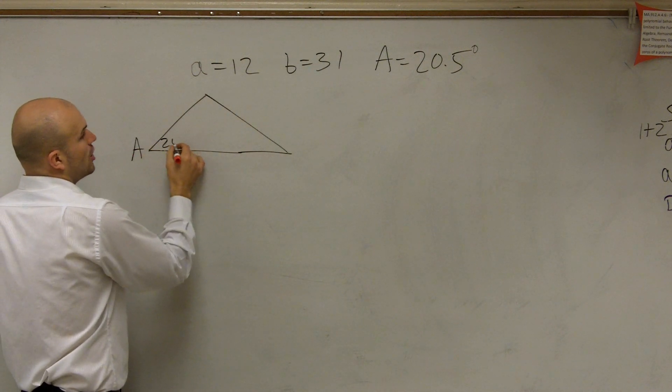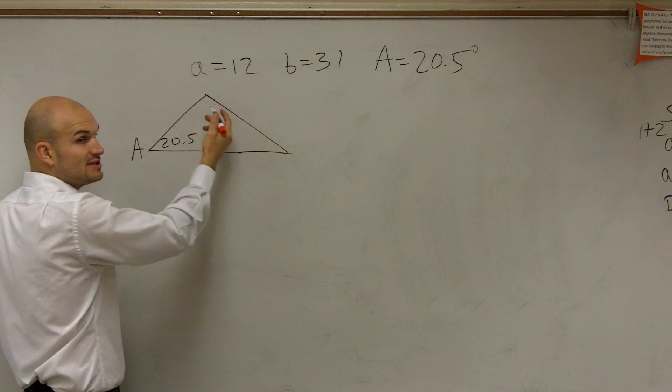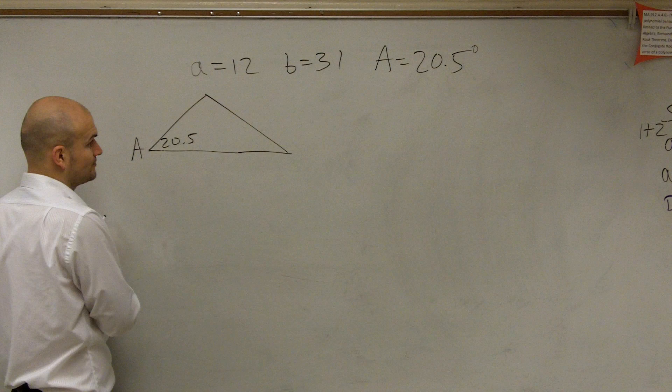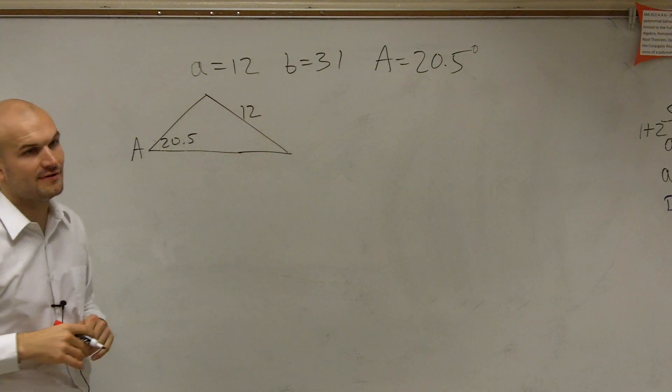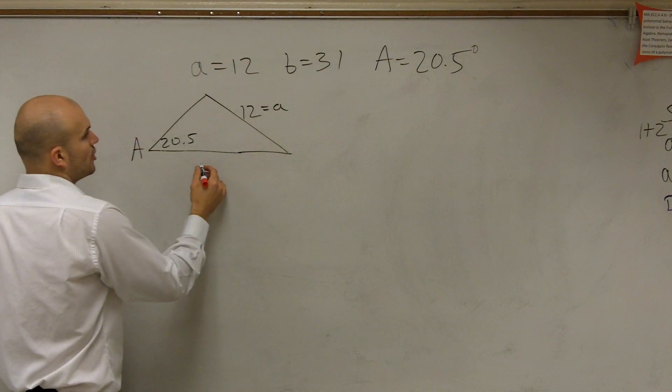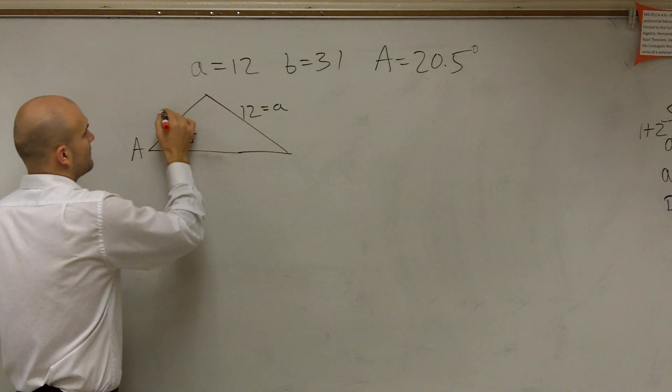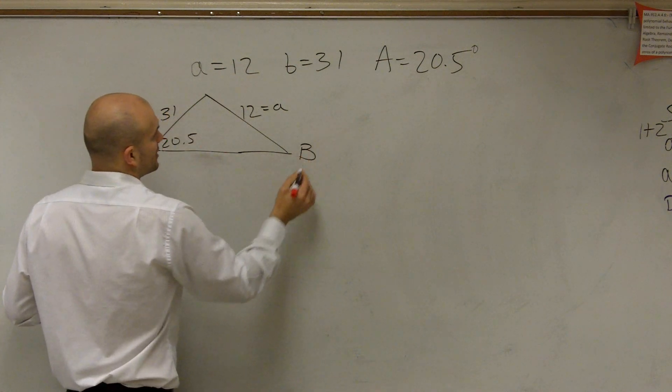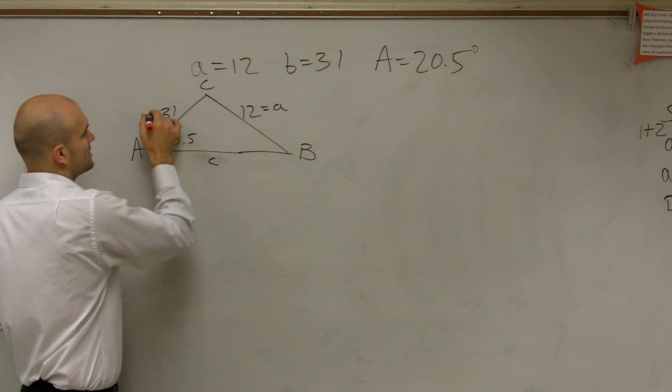So you don't really always know what exactly your triangle could look like. So it could be one with an obtuse angle, or it could be one with an acute. So we're going to have A equals 20.5 degrees, and a equals 12 over there. And then we know b equals 31. Actually, let's write this here. And here's our angle B. So therefore, we'll call this C and this little c.